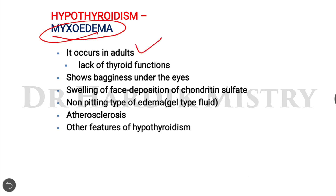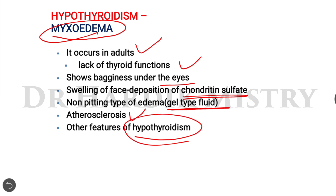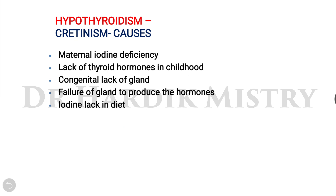Hypothyroidism occurring in adults is known as myxedema. It occurs due to lack of thyroid function and presents with puffiness under the eyes and swelling of the face due to deposition of chondroitin sulfate. This produces a non-pitting type of edema from accumulation of gel-type fluid, along with atherosclerosis and other features of hypothyroidism.